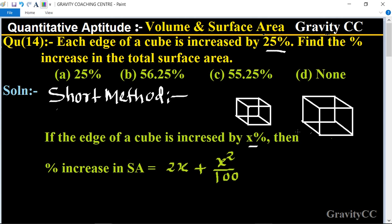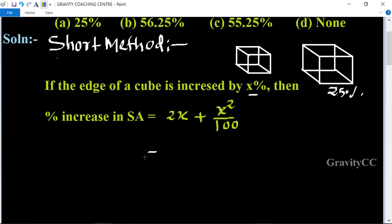First suppose this one is the cube and its edge is increased by 25%. So we use the value of x equal to 25 in this formula: 2 × 25 + 25²/100 = 50 + 625/100.